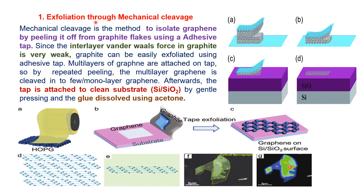The first exfoliation method is mechanical cleavage — isolating graphene by peeling it off from graphite flakes using adhesive tape. The pulling pressure of the adhesive tape is enough to break the weak van der Waals forces between the graphite layers, yielding a single layer of graphene. Looking at the diagram, the blue area is the adhesive tape and the gray portion is the graphite. By removing the adhesive tape, it pulls some of the graphite layers with it, and there is a visible difference in graphite layer thickness between areas A and B.